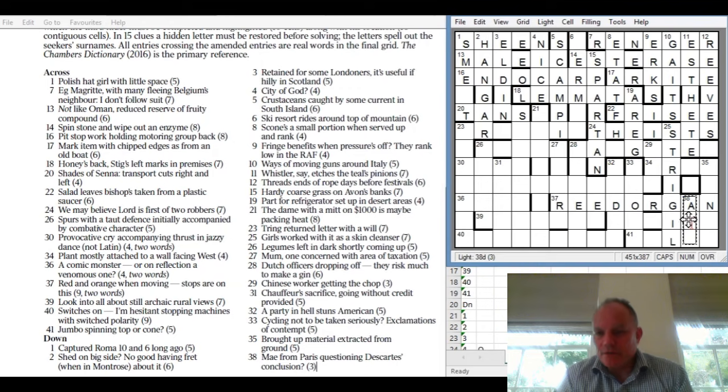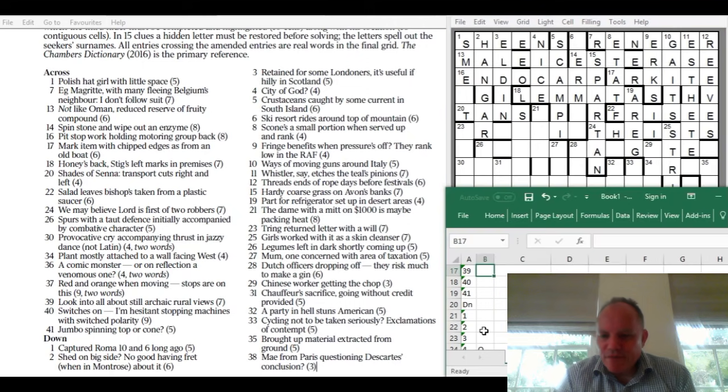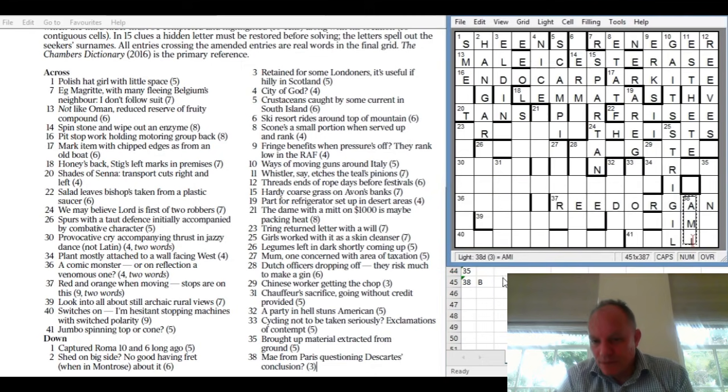38 down: May from Paris questioning Descartes' conclusion. Descartes' conclusion was I AM from Cogito Ergo Sum, so questioning that would be AMI. That's not May from Paris, but could this be using BAE, the new word for boyfriend? 29 down: Chinese worker getting the chop - HAND getting its end chopped off gives us HAN, one type of Chinese person.